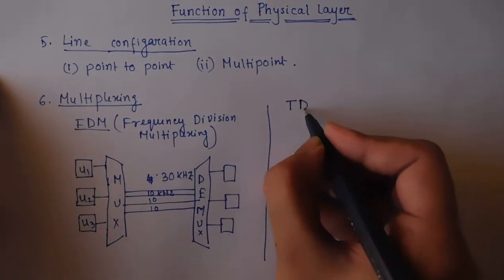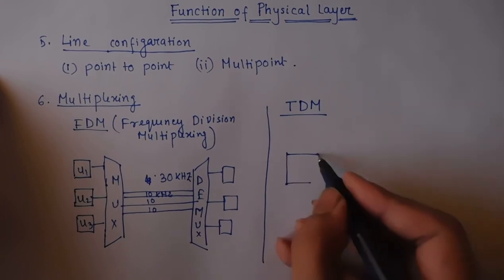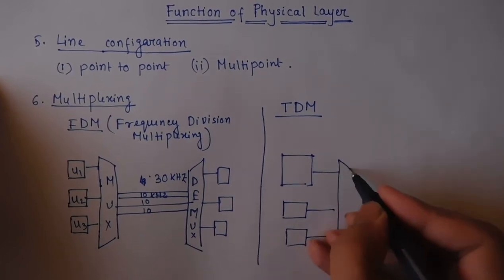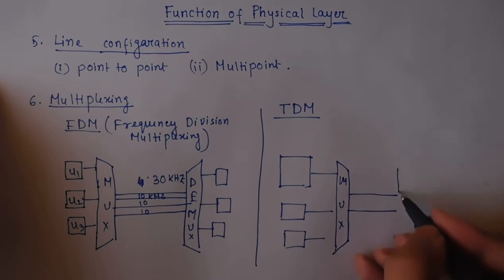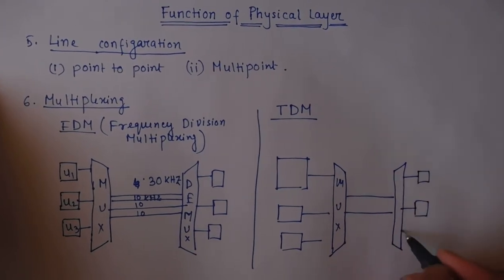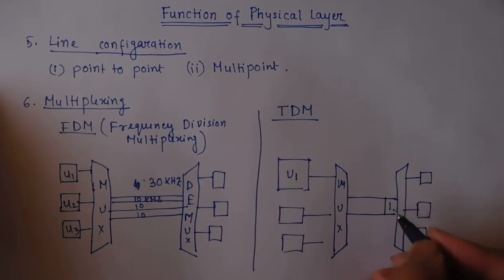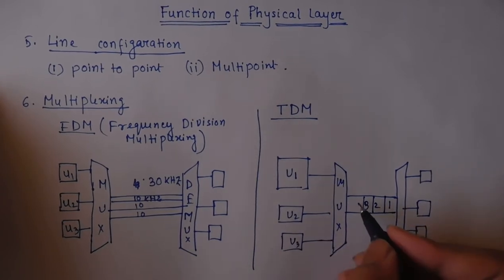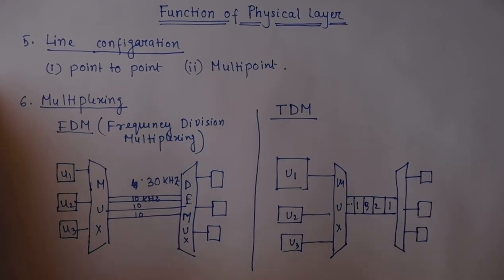In Time Division Multiplexing (TDM), suppose there are user 1, user 2, and user 3. Each user is allocated a time quantum. User 1 sends data, then user 2, then user 3, then user 1 again, and so on in a round-robin fashion.